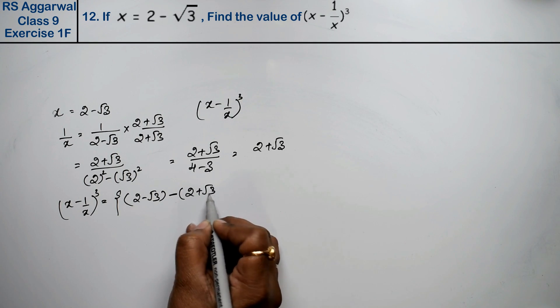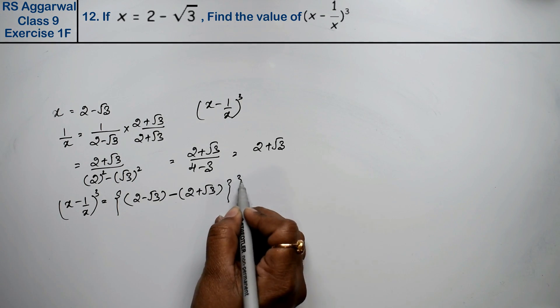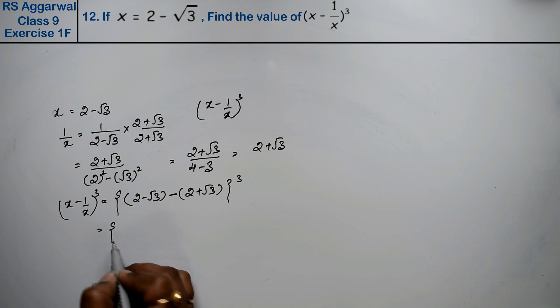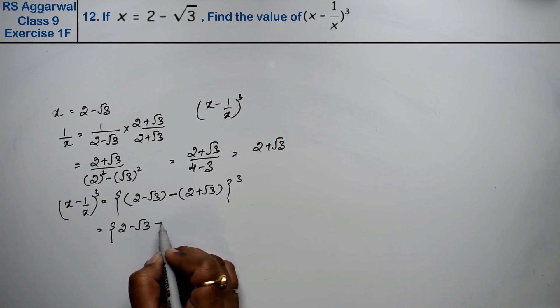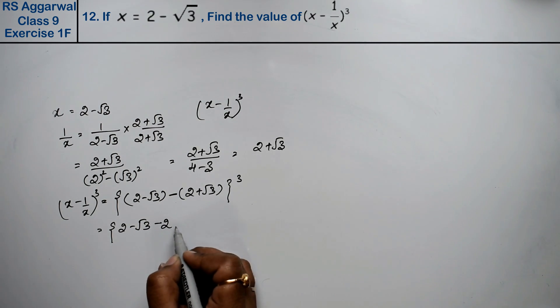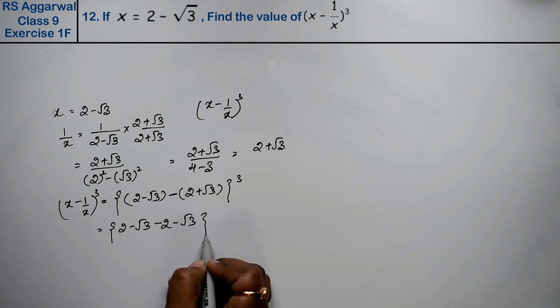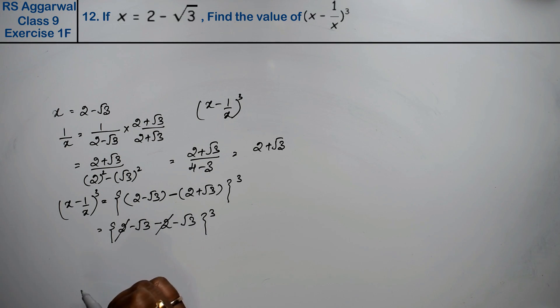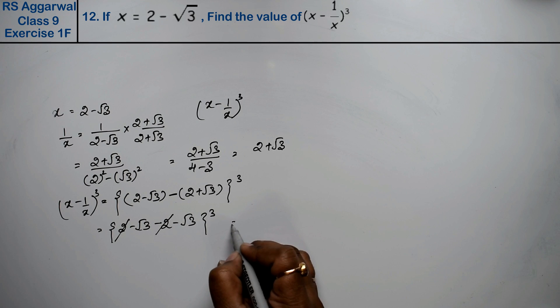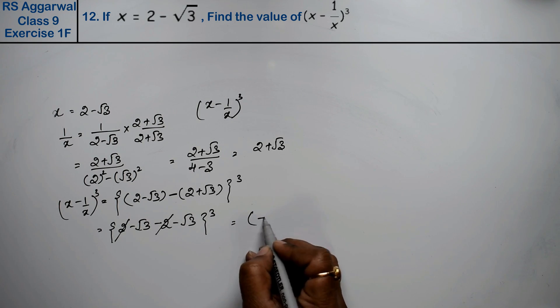The whole cube. Now open the small brackets: 2 minus root 3 minus 2 minus root 3. The positive 2 and negative 2 cancel out. These don't cancel, so we get minus 1 root 3 and minus 1 root 3.